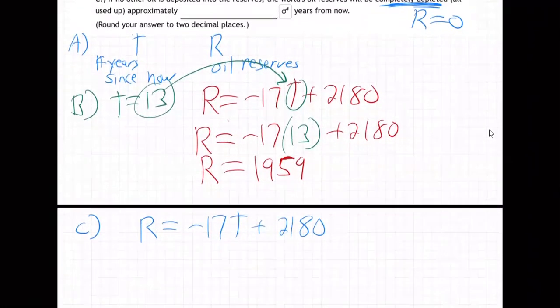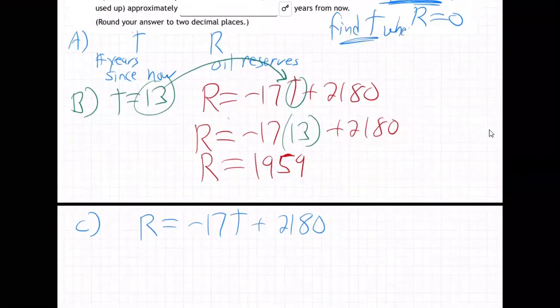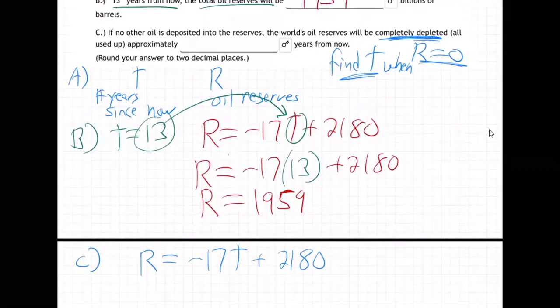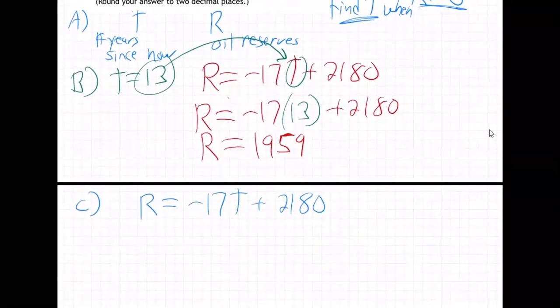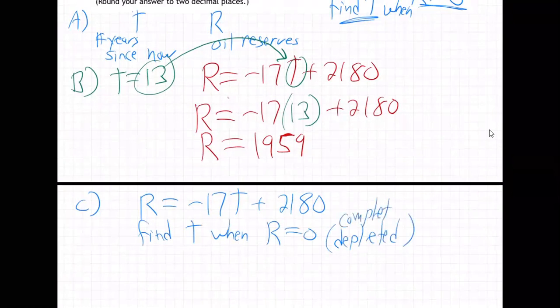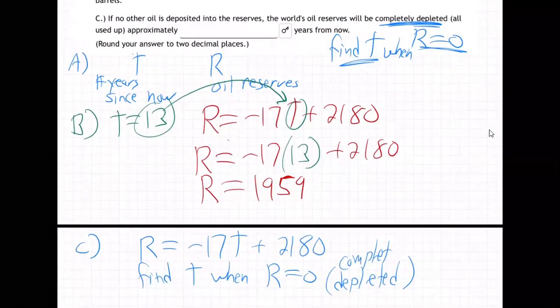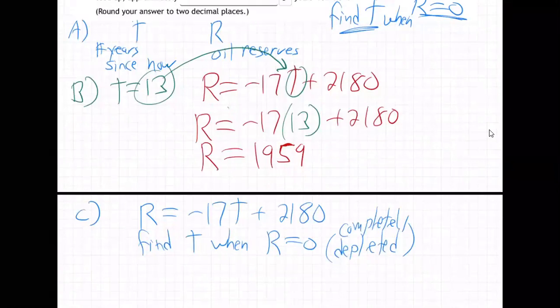Part C. Formula is the oil reserves is minus 17T plus 2180. So, they're saying completely depleted. That means the reserves are zero. That's when it's completely depleted, when the amount of reserves are zero. So, they're saying, find T when R is zero. Do you realize that's what they're basically saying? That's exactly what they're saying. Find T, like how many years from now? What is T? How many years from now? When it's completely depleted, meaning R is zero. So, that means I take this formula, and I go, okay, I need to find T when R equals zero, depleted. R is zero. So, then you just plug in, right there, zero.